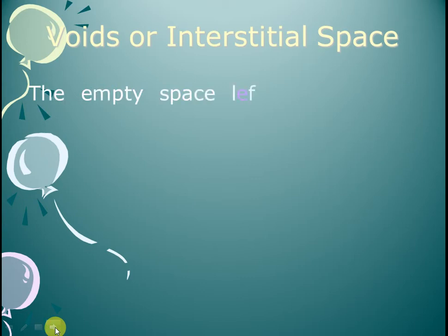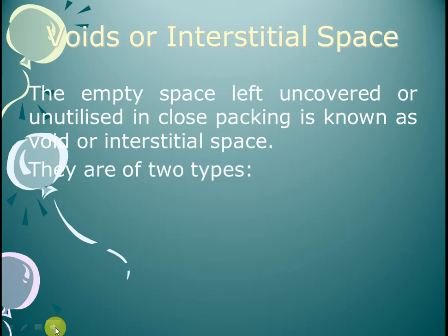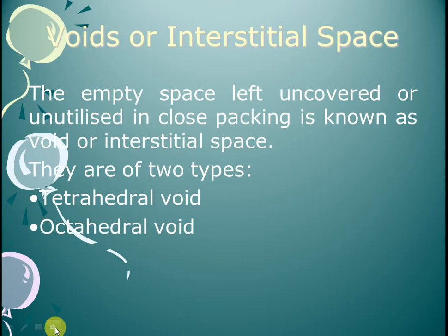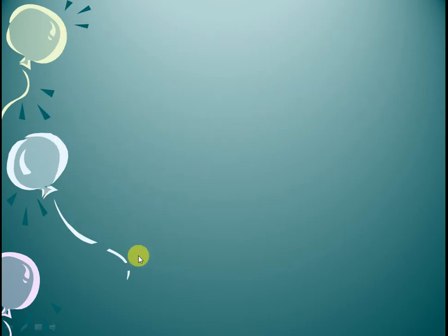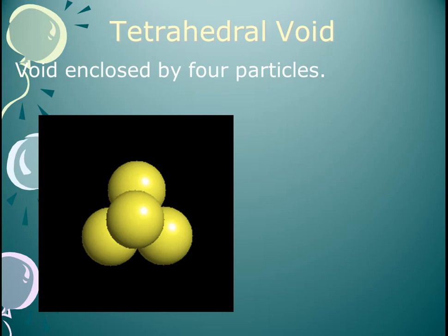Now here is a topic of void and interstitial spaces. What is void? When atoms are packed in a crystal, empty spaces are found between them. The void is generally of two types: one is the tetrahedral void and one is the octahedral void. When one layer is placed on another layer, voids form between the layers.